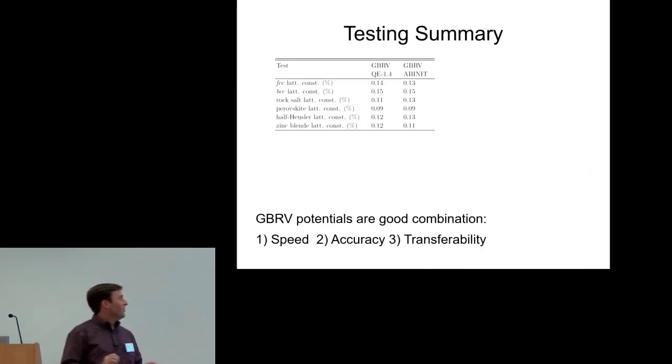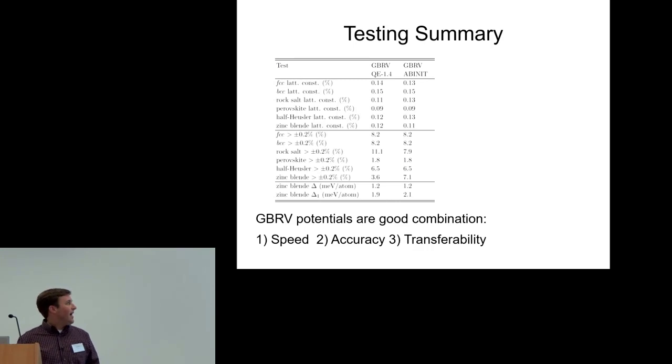Summary of the testing results: we typically get lattice constant errors of less than 0.2% across this range of compounds. We can also look at the small number of materials outside this range. Having a good average result isn't very useful if you want to study a material which is problematic.